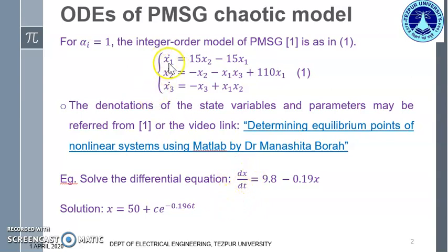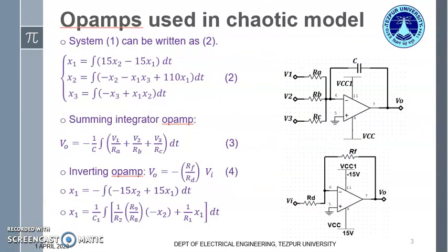Similarly, for this particular ordinary differential equation ODE, to find out the solution x1, we have to integrate x1 dot or the right hand side of the equation. System 1 can be written as in equation number 2 where the solutions x1, x2 and x3 can be obtained by integrating the right hand side of the set of ODEs. In circuit design x1, x2 and x3 on the left hand side, we shall consider them as the output voltage and those terms at the right hand side, we shall consider as the input voltage.